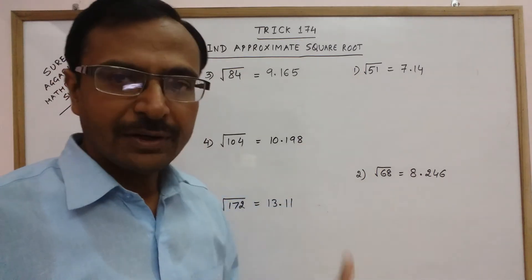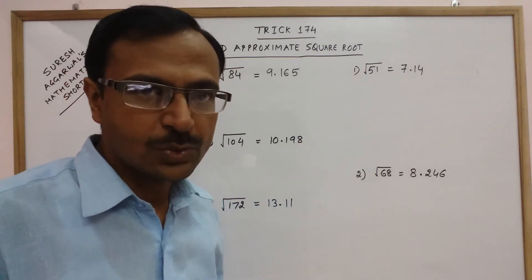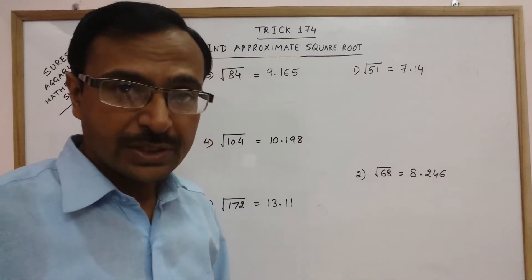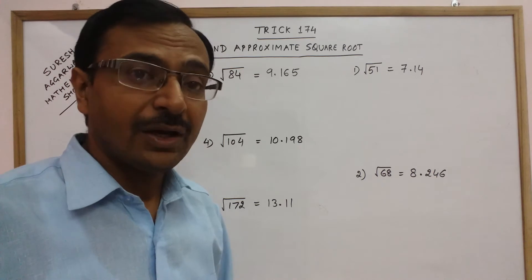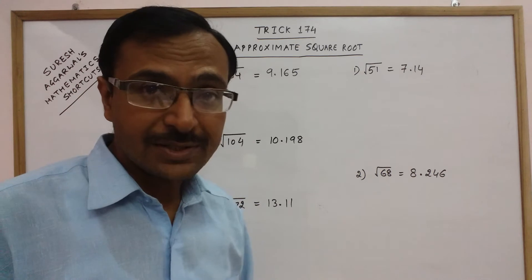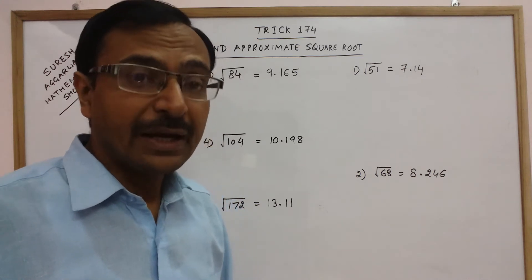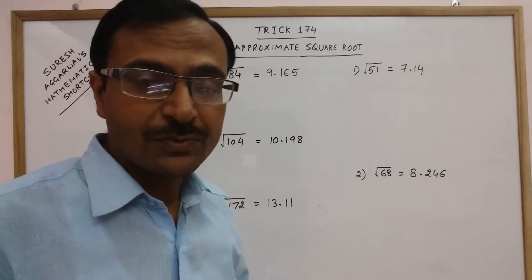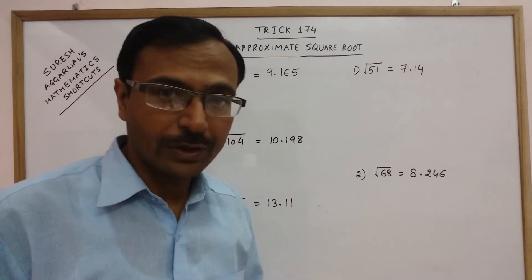So under root 51, the only method taught at school level is a long division method which students are afraid of. Studies have shown that 80% of the students of class 10th, 11th and 12th get confused while finding the square roots of numbers which are not perfect squares by long division method.